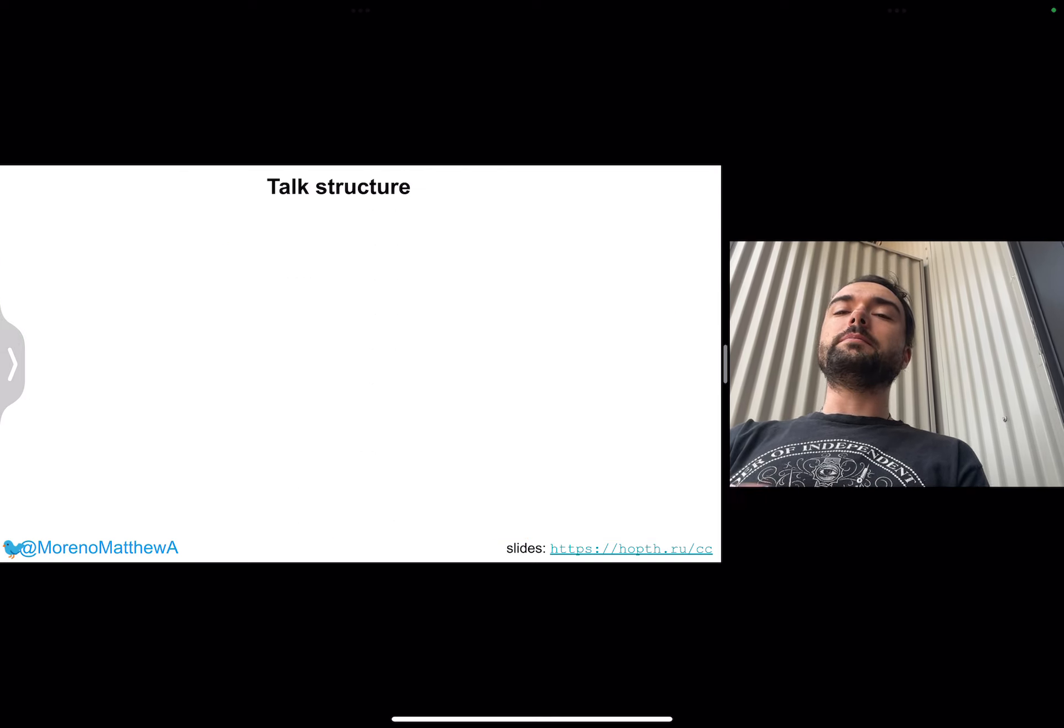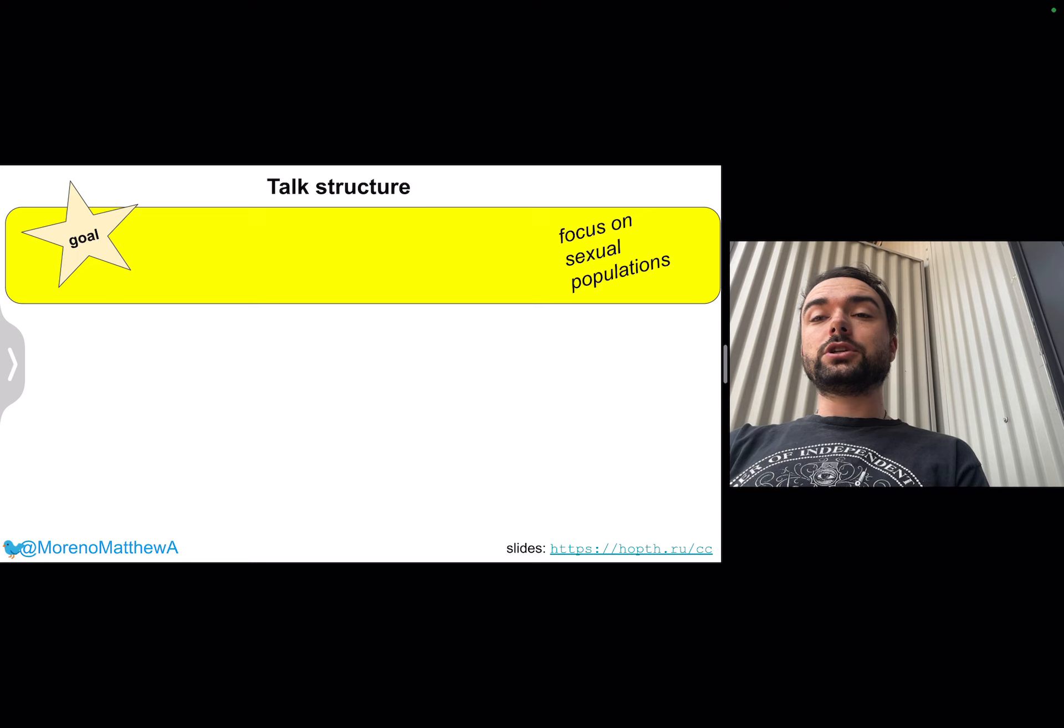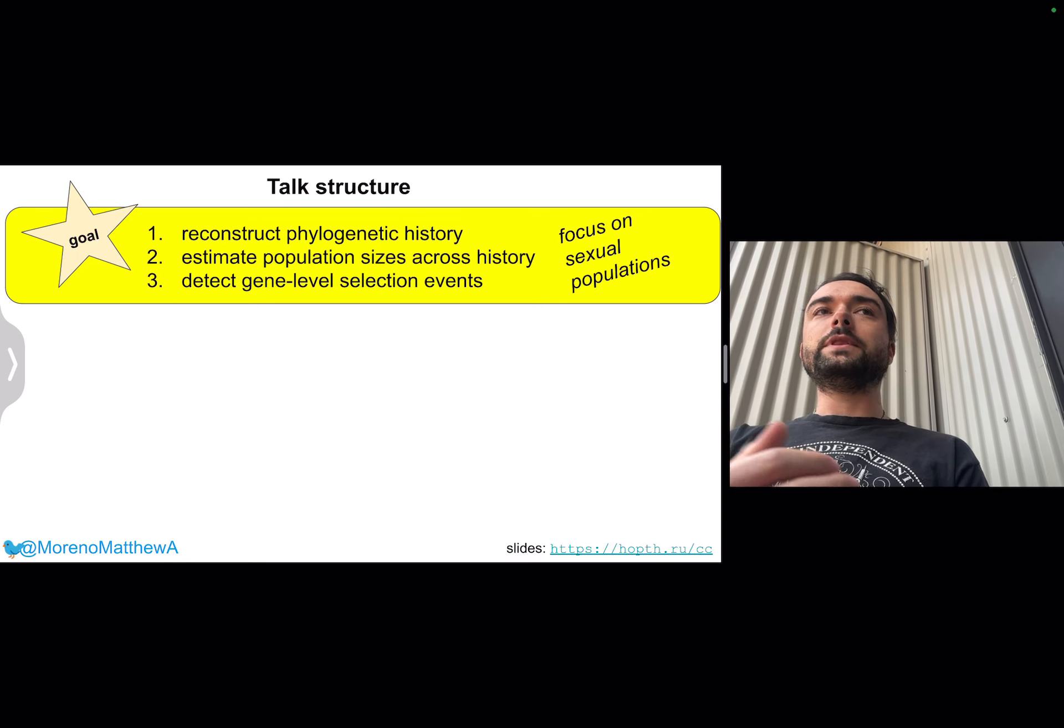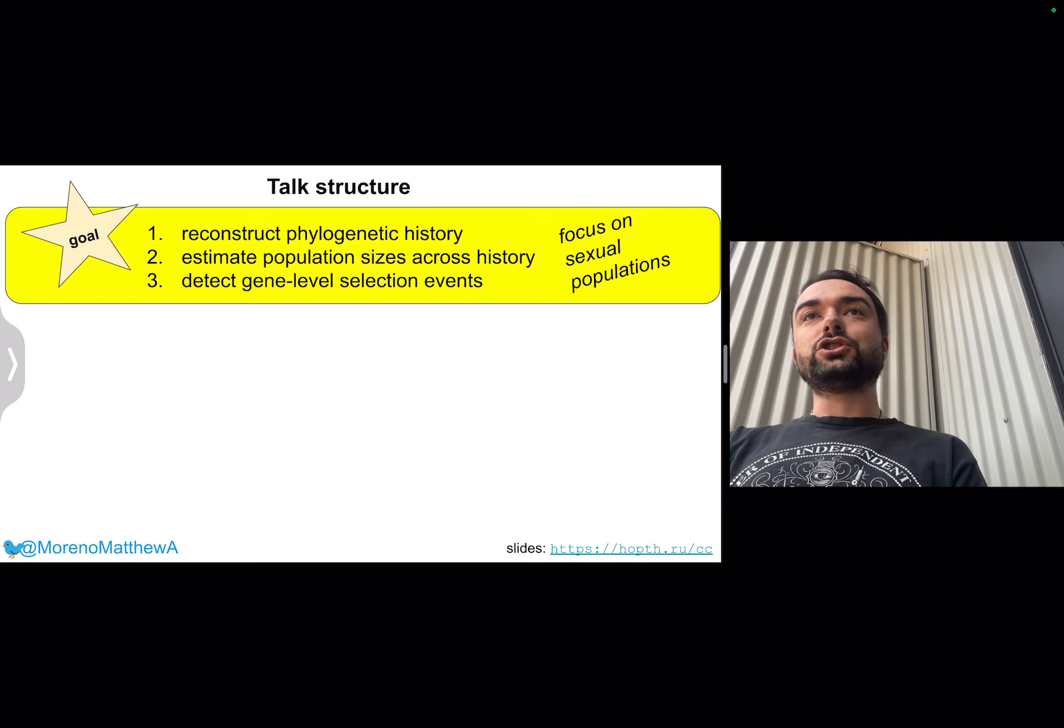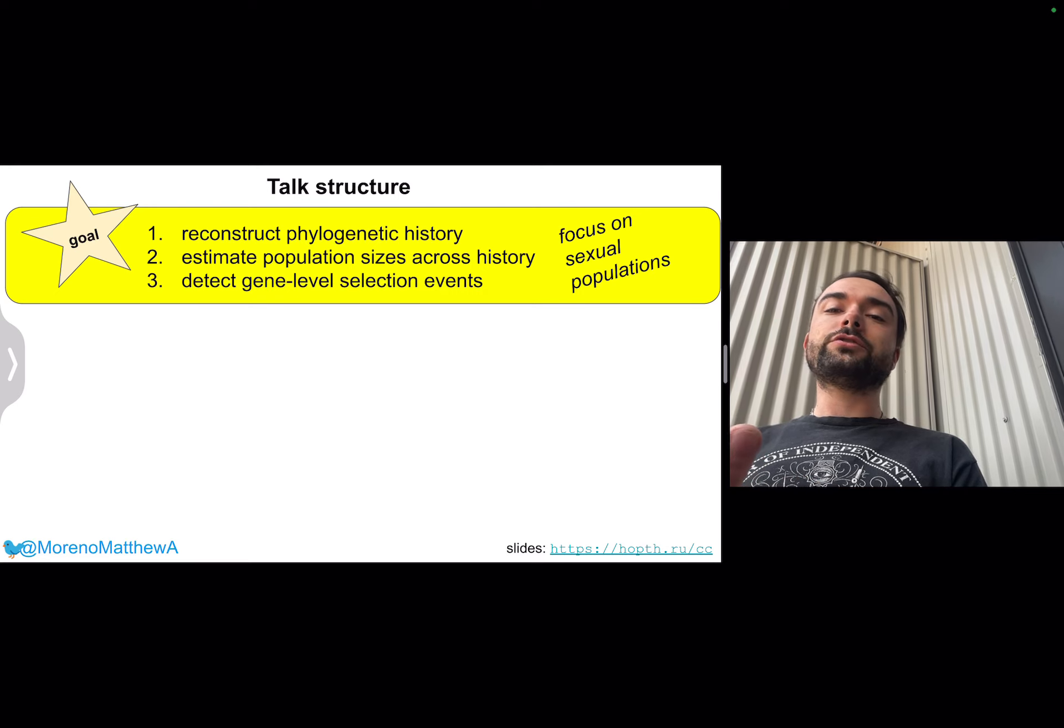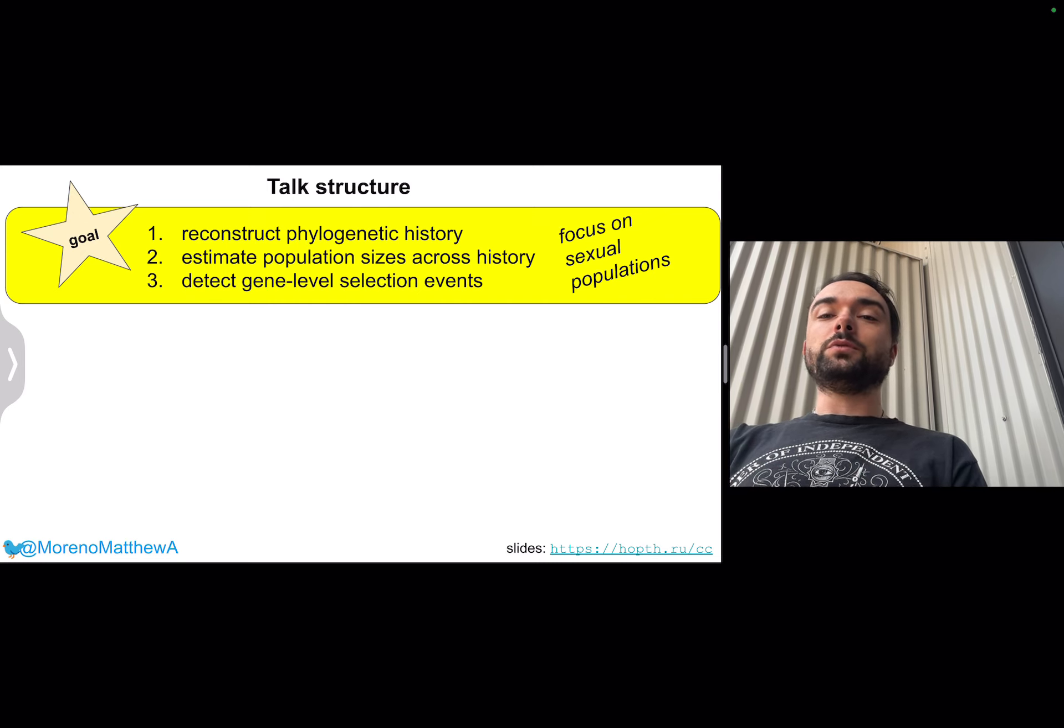So the main point of this talk is to communicate the capabilities of this methodology with a particular focus on sexual populations. We'll be talking about how you can use the developed methodology which we call hereditary stratigraphy to reconstruct phylogenetic history from an EC run, estimate the population sizes at different points in that history, and detect selection within the system.